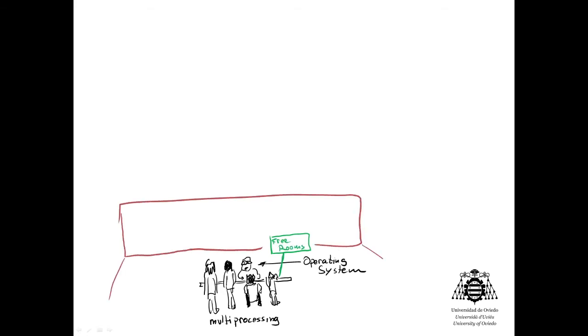What if we have several processes simultaneously allocated in the main memory? Well, we can start talking about an operating system and multiprocessing. We will find many solutions, being the first and most simple one the fixed partitions solution.